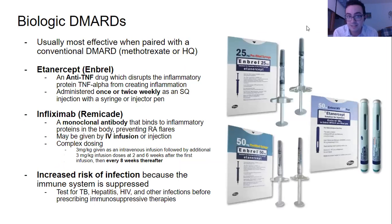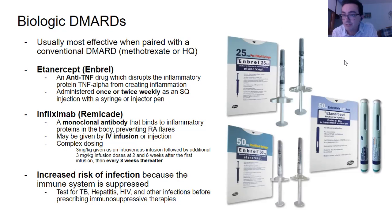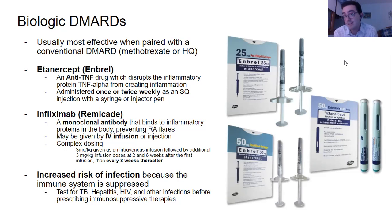We also have biologic DMARDs — the newer DMARDs, most effective when paired with methotrexate or hydroxychloroquine. Because these molecules are very large and complex, they cannot be taken orally and are all injections or IV, often coming as pre-filled pens. Etanercept, or Enbrel, is an anti-TNF drug: TNF-alpha is a protein in your body that causes inflammation, and by suppressing it you get less inflammation, stopping the inflammatory processes in rheumatoid arthritis. It's administered once or twice weekly as a subcutaneous injection.